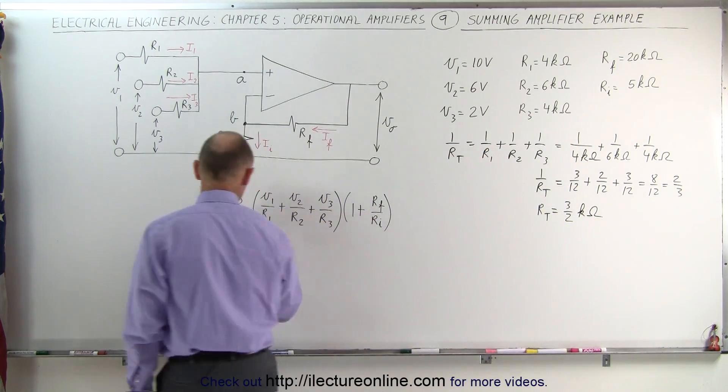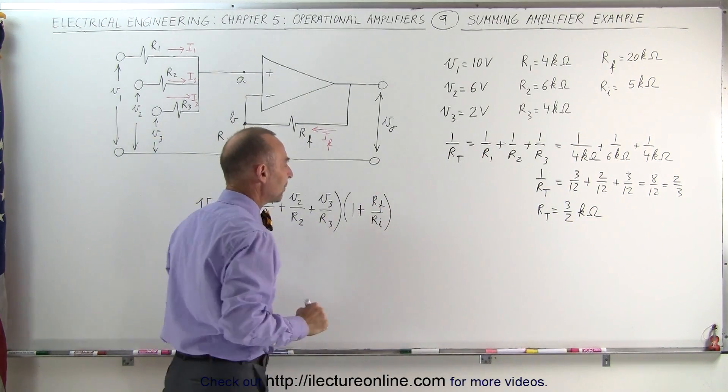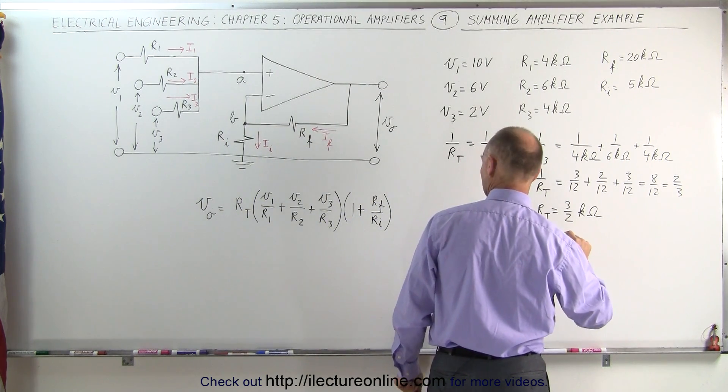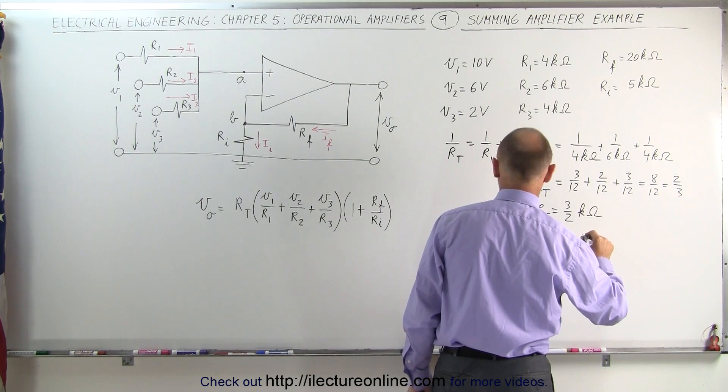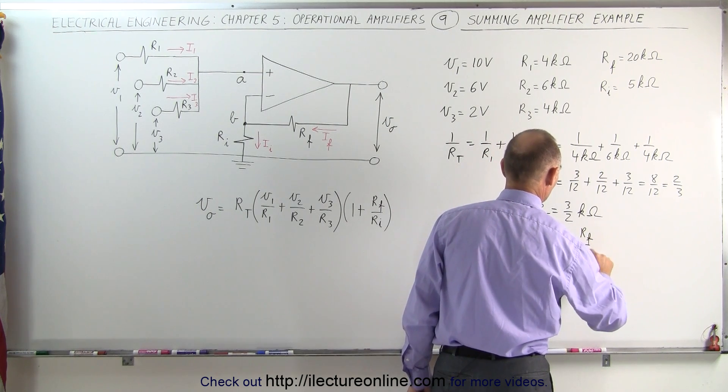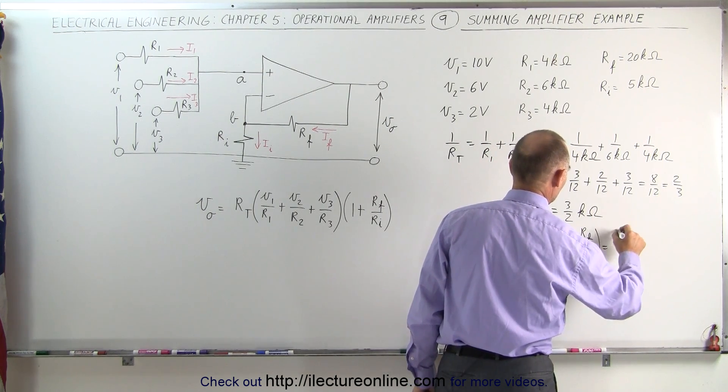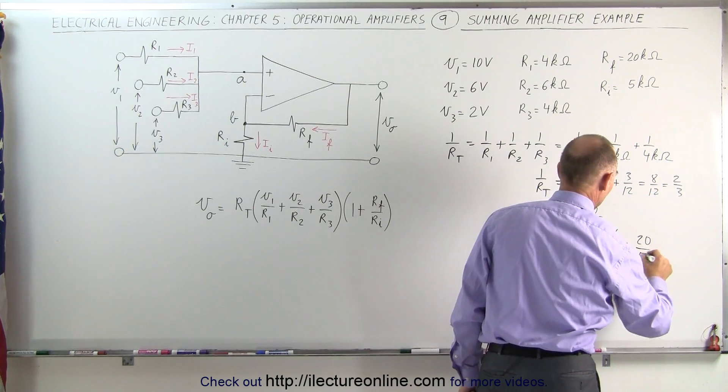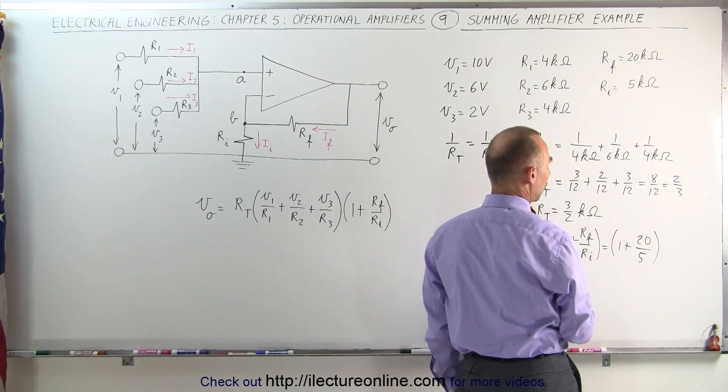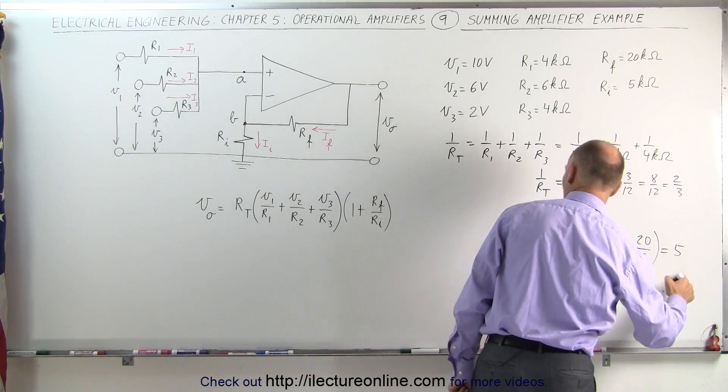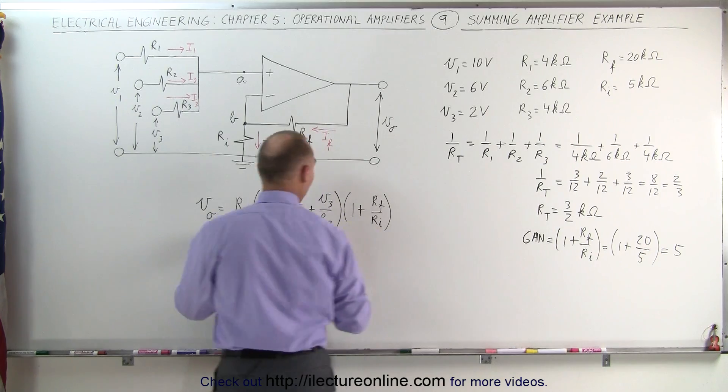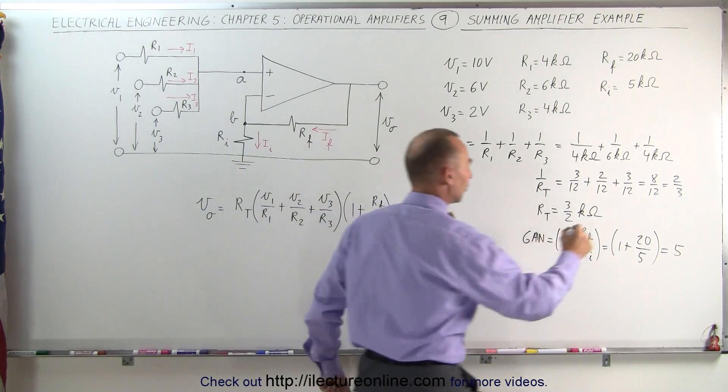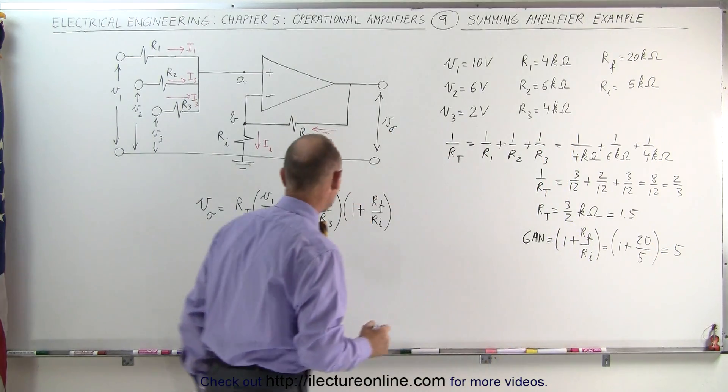That goes in here. Now, rf divided by ri. So the gain is equal to 1 plus rf over ri, which is equal to 1 plus rf was 20k ohms and ri was 5k ohms. So 20 divided by 5 is 4 plus 1, that's equal to 5, which means the gain is 5 and r total is 1.5. So we can write this as 1.5k ohms.